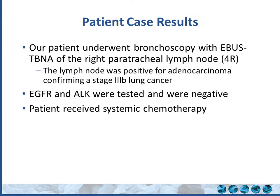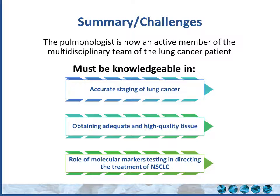Going back to Carl: we performed EBUS-TBNA of the right paratracheal lymph node, which was positive for adenocarcinoma, confirming stage 3B lung cancer. EGFR and ALK were tested and were negative. This was a couple of years ago when ROS1 and PD-L1 were not as prominent. The patient received conventional systemic chemotherapy. In summary, as a pulmonologist obtaining tissue, you are now an active member of the lung cancer care team. You must know the staging of lung cancer well, obtain adequate and high-quality tissue, and plan ahead for molecular marker testing.